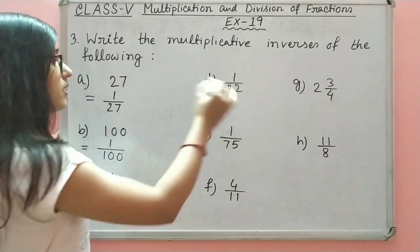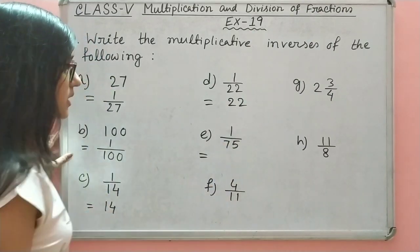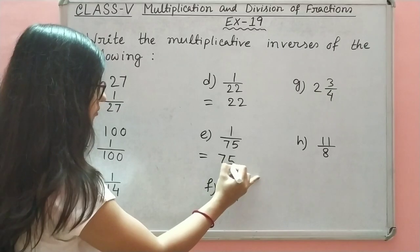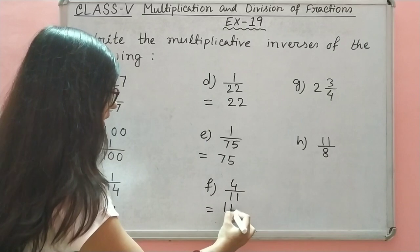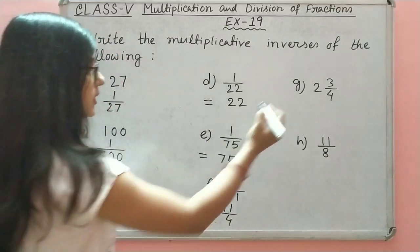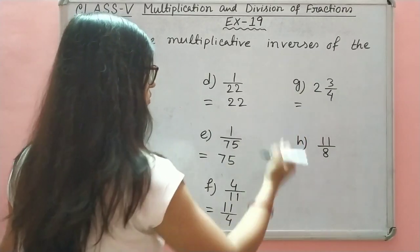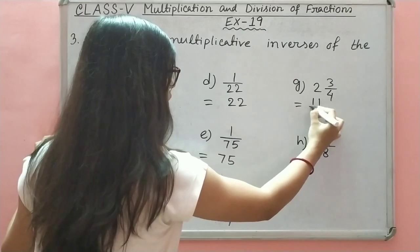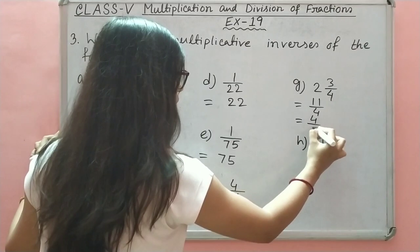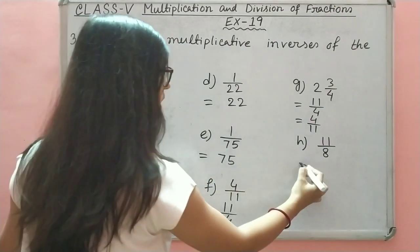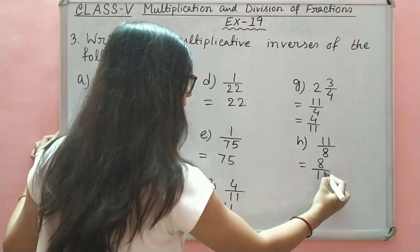The multiplicative inverse of 1 upon 22 is 22. The multiplicative inverse of 1 upon 75 is 75. The multiplicative inverse of 4 upon 11 is 11 upon 4. The multiplicative inverse of 11 upon 8 is 8 upon 11.